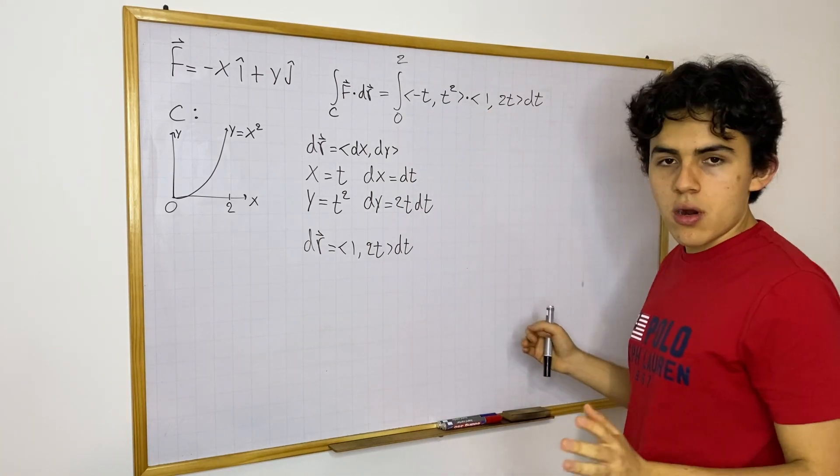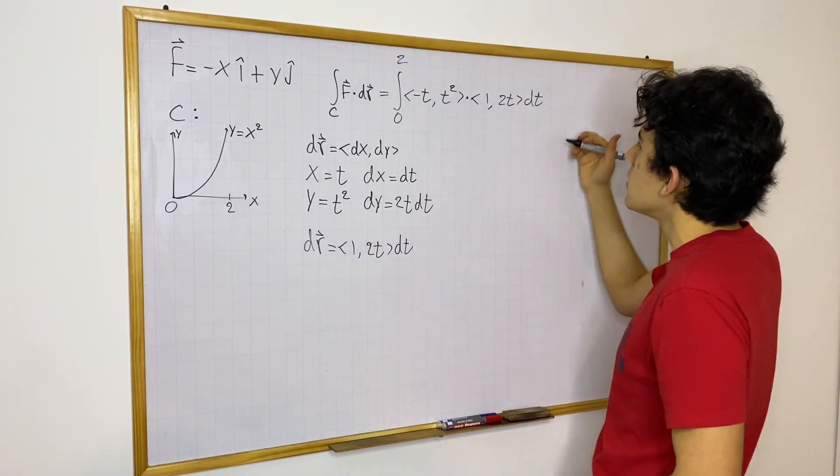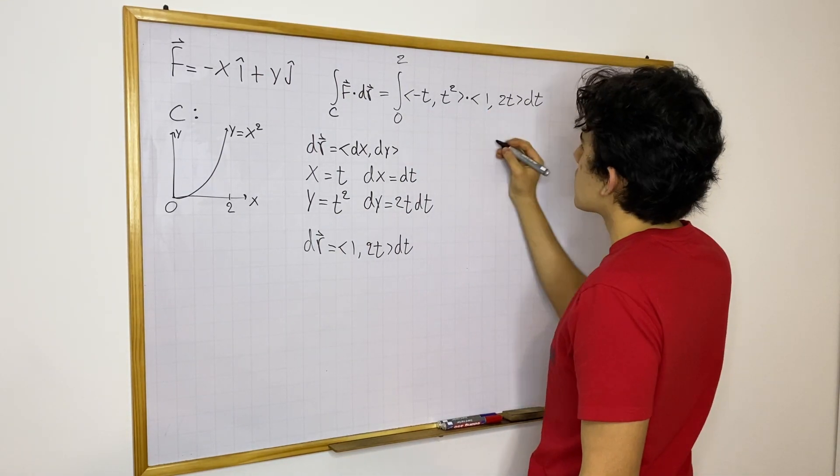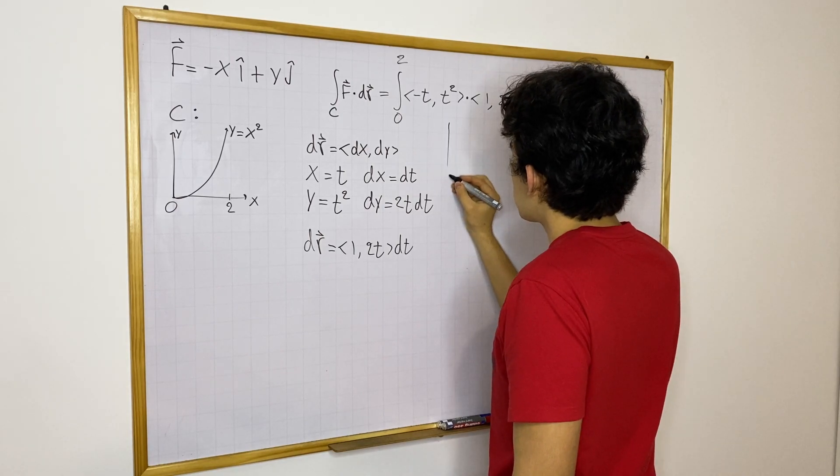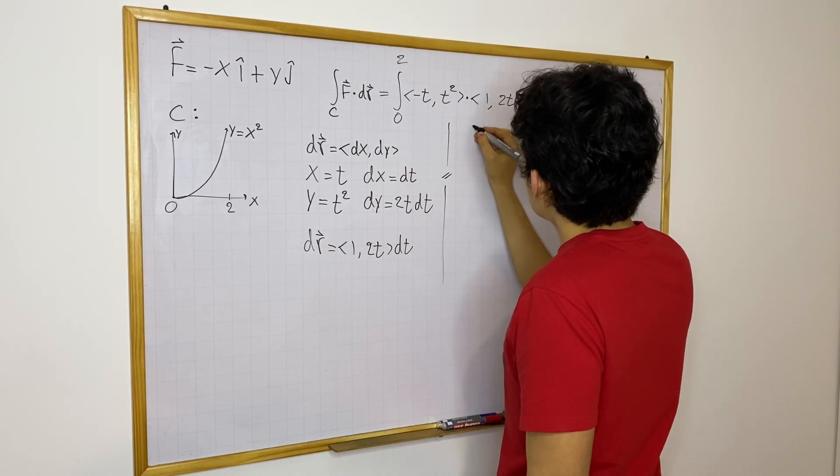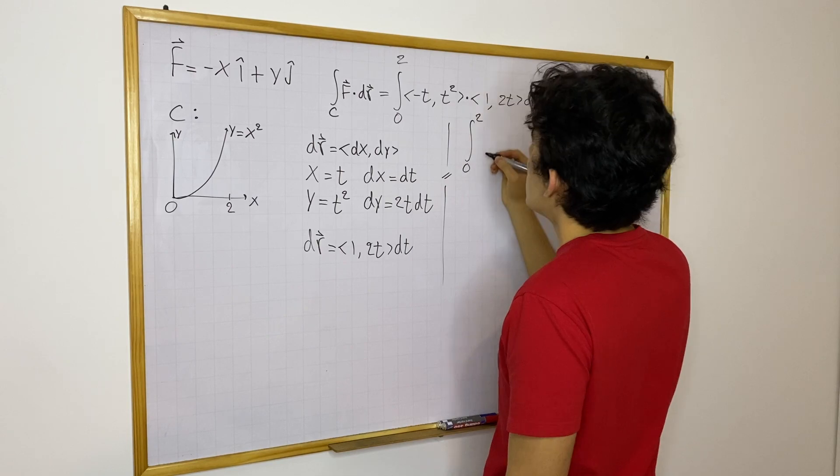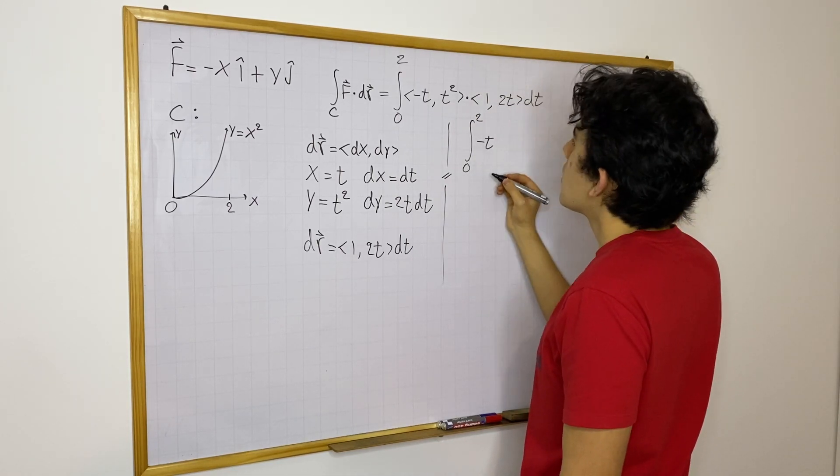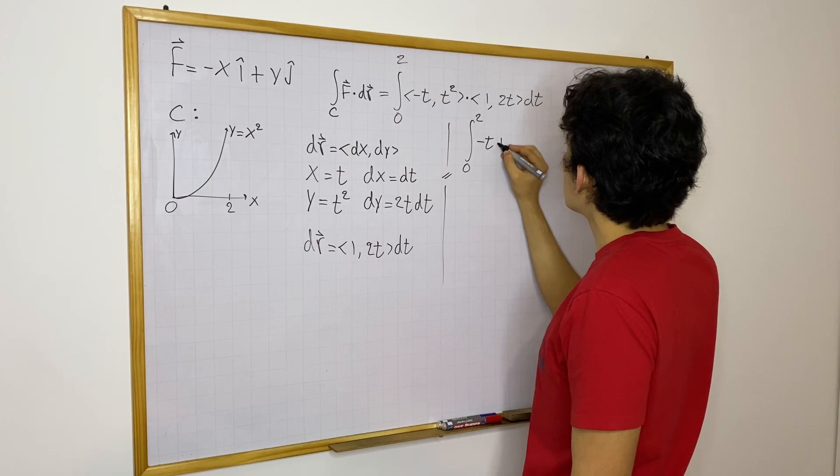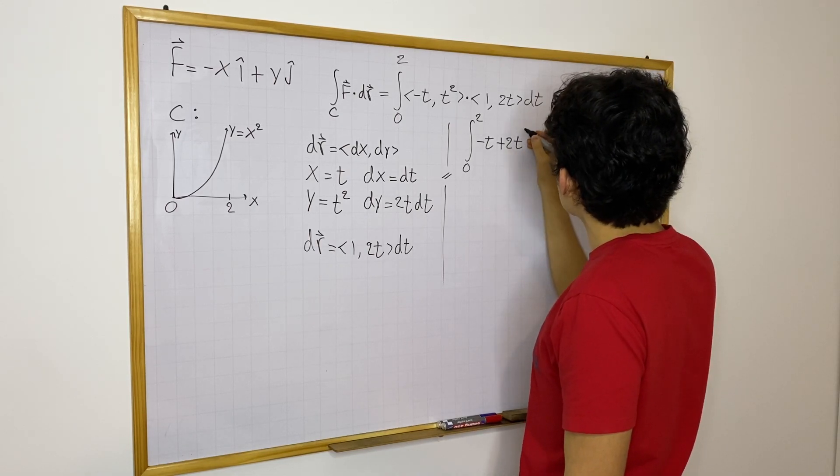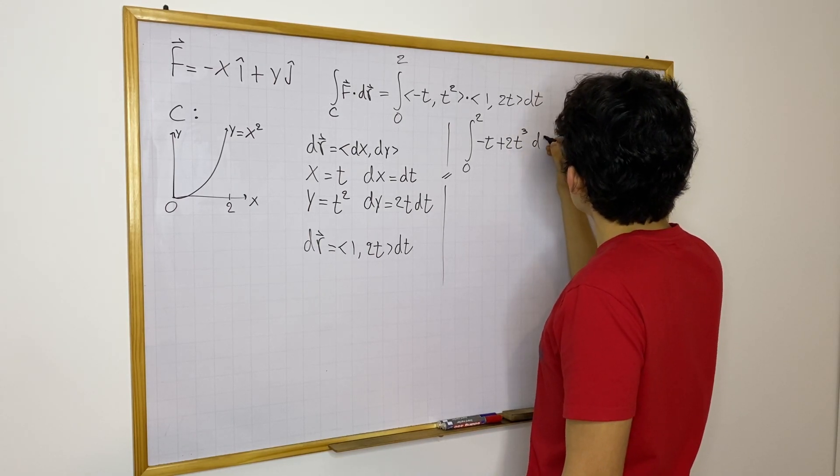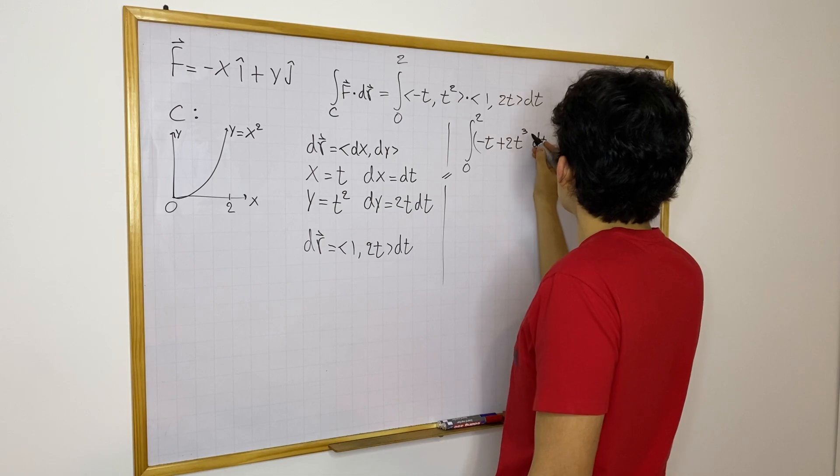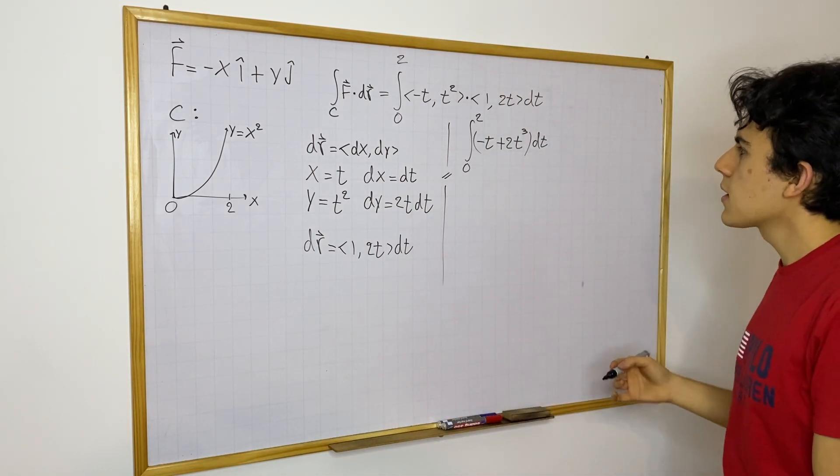You can take this dot product, that is something totally legal, and we would get the following. So I'll continue probably down here. So we have the integral from 0 to 2 of minus t plus 2t cubed dt. Remember, this dt goes outside of the entire thing.